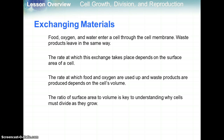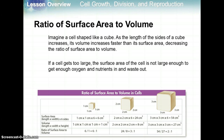Also, consider the idea of exchanging materials in and out of the cell. Food, oxygen, and water enter a cell through the cell membrane, and waste products leave the same way. The rate at which exchange takes place depends on the surface area of a cell. The rate at which food and oxygen are used up and waste materials are produced depends on the cell's volume. So the ratio of surface area to volume is key to understanding why a cell must divide as it grows — why couldn't cells just get really big?